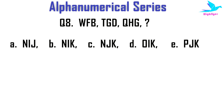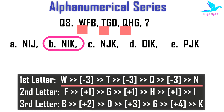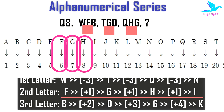Next example: what is the next alphanumerical term in the series W F B, T G D, Q H G, __? The options are: A) N I J; B) N I K; C) N J K; D) O I K; E) P J K. The right option is B: N I K. For the first letters W, T, Q — three alphabets back from W gives T, three back from T gives Q, and three back from Q gives N. For the second letters F, G, H — one alphabet is added each time, so after H comes I.